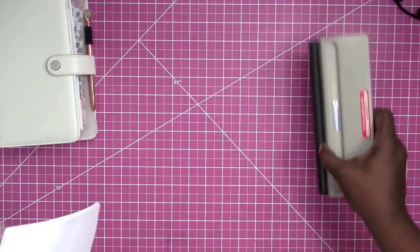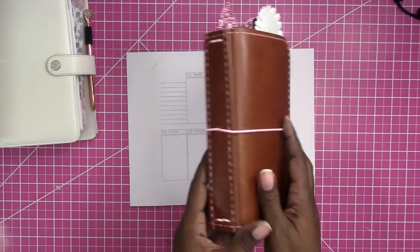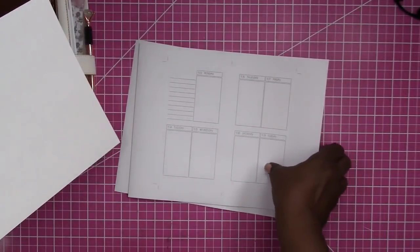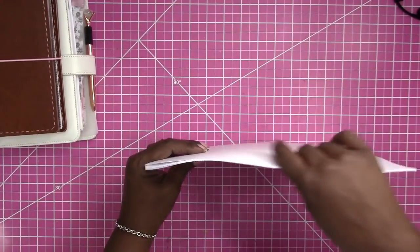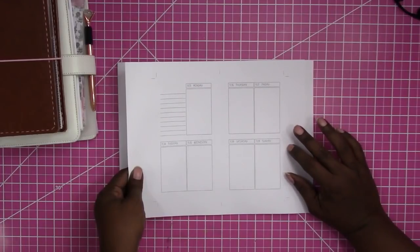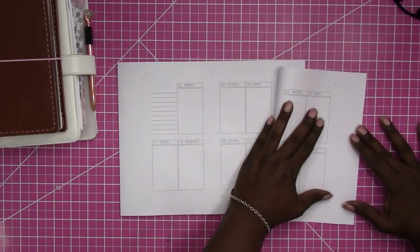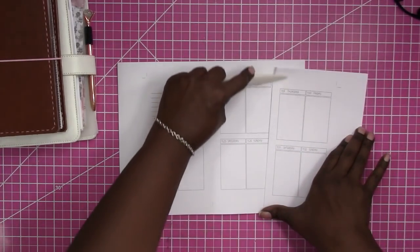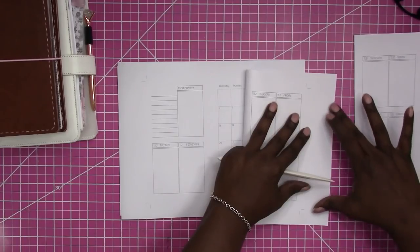Now we're going to cut our inserts for the traveler's notebook. On this one I did not print a cover. But I'm just going to use a blank piece of white cardstock for my cover. And I'm just going to put that on the outside and line it up as if it's part of my inserts. This is a different method of cutting inserts that I have been toying around with. It works better for thinner inserts. But I'm going to give it a go here for this larger stack. So I'm going to go ahead and fold all of my inserts in half.